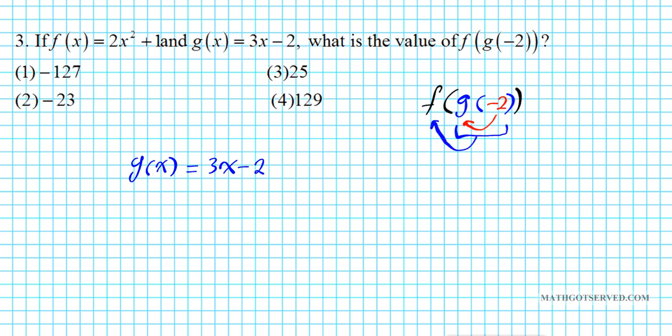Let's do the first step, which is g of negative 2. G of negative 2 is 3 times negative 2 minus 2. Using the order of operations, we have negative 6 minus 2, which is negative 8.